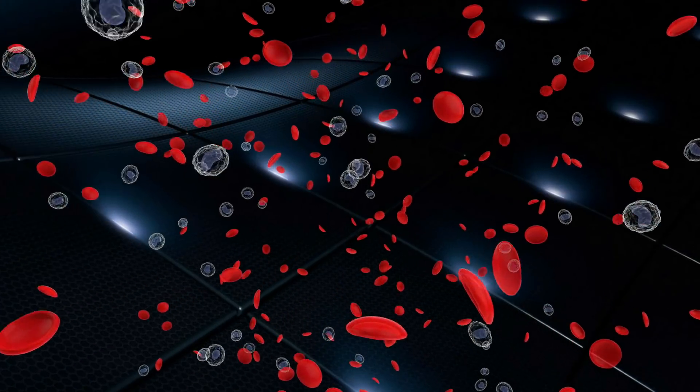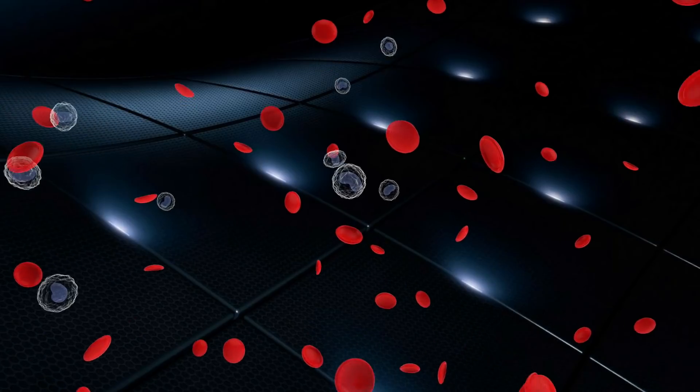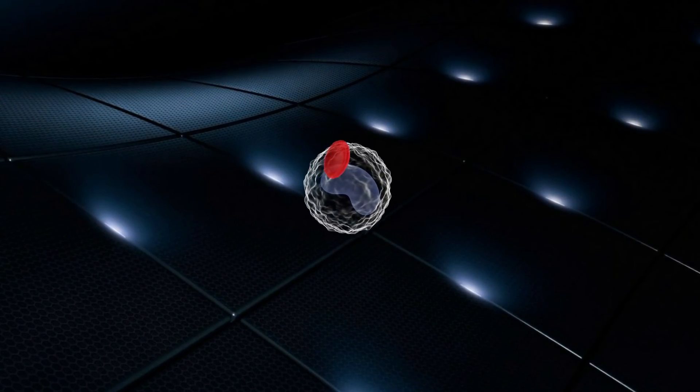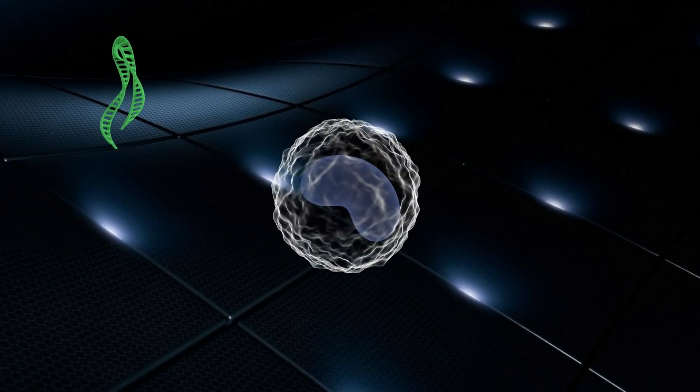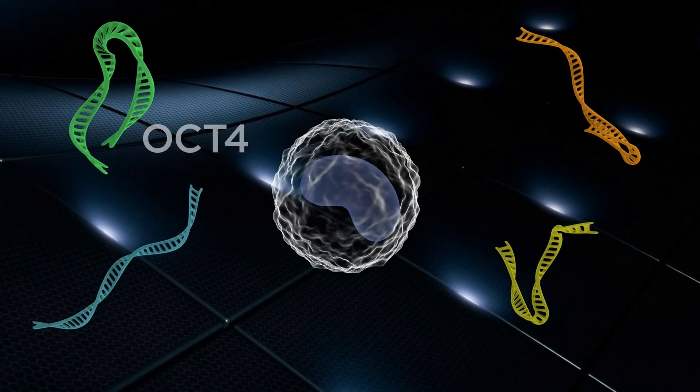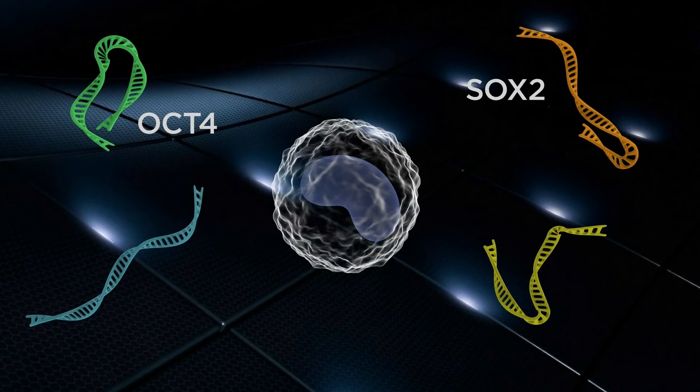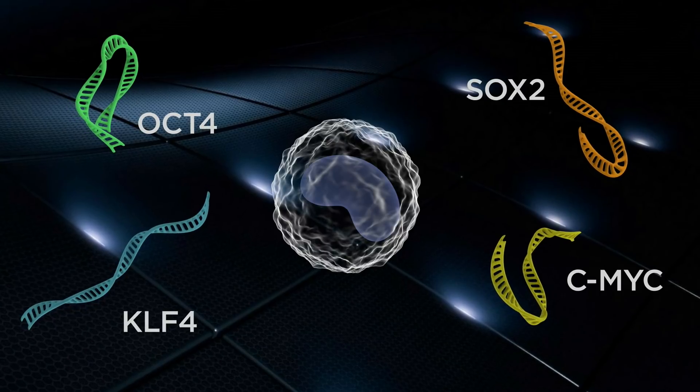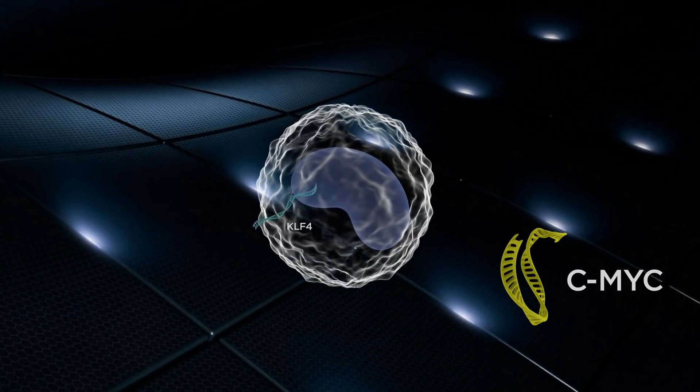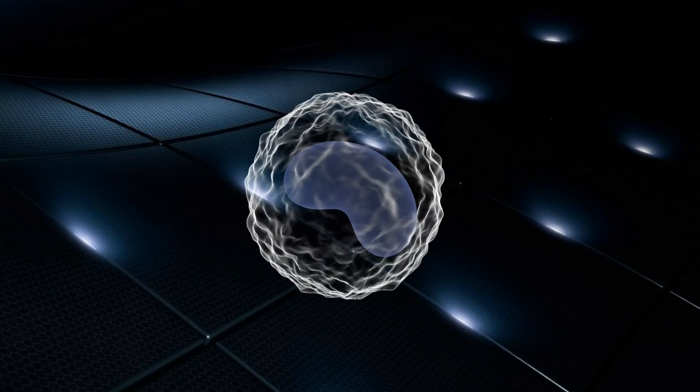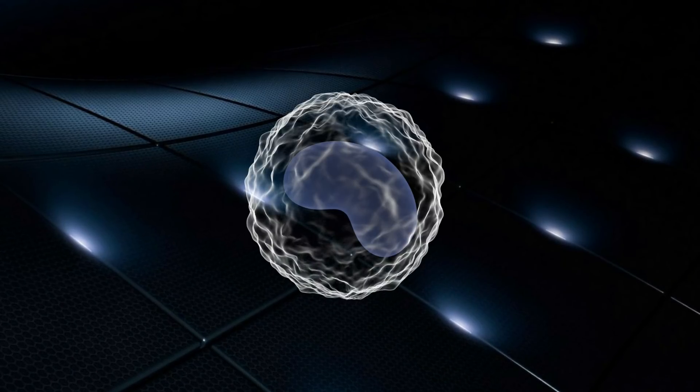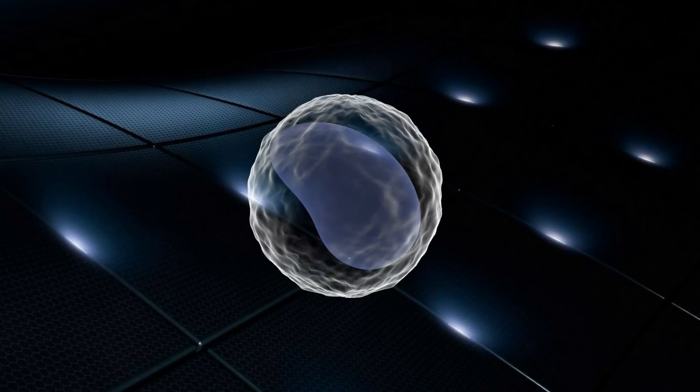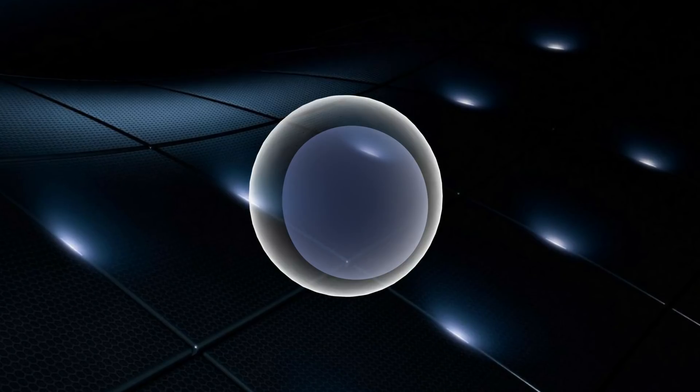To generate induced pluripotent stem cells, we first derive skin cells or blood cells from a healthy or diseased person. Then four defined genes are introduced into these cells: OCT4, SOX2, KLF4, and c-MYC. As a consequence, over the next three to four weeks, these cells, such as blood cells, change their identity and get reprogrammed into iPSCs.